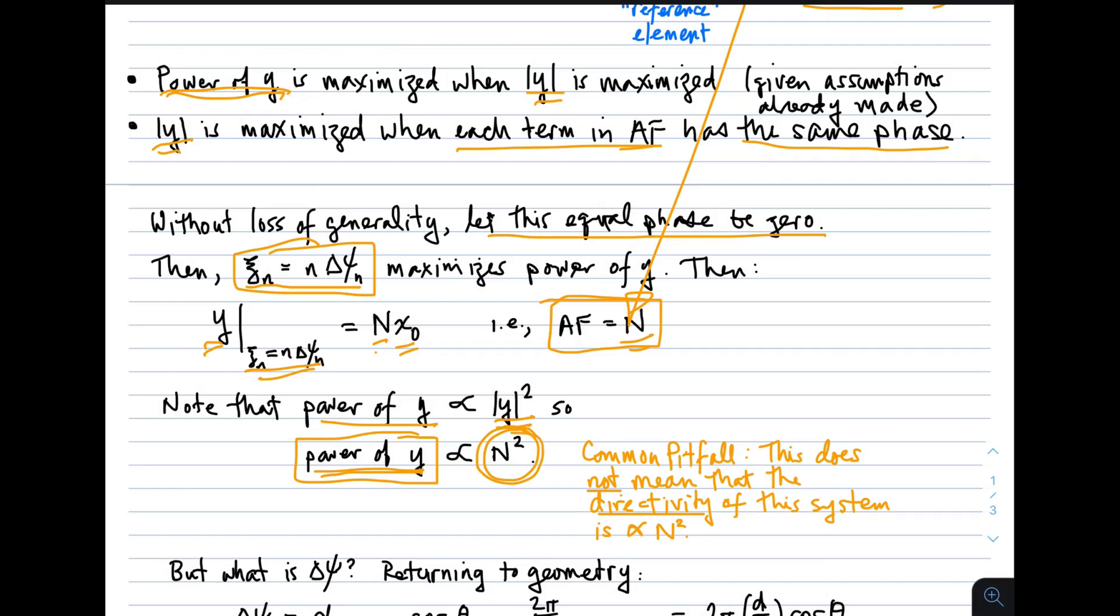Now, at this point, let me identify a very common pitfall that even experts fall into from time to time. This does not mean that the directivity of the system is proportional to n squared. All we're saying is that the power at the output is proportional to n squared. Remember, directivity refers to power relative to average power—that is, power averaged over all spatial directions. And we really haven't addressed what the power over all spatial directions is yet. There will be some conditions in which directivity is proportional to n squared. In fact, it's equal to n squared. There will be many other conditions in which it is not equal to n squared and could be very, very different. So just dropping that on you now so that you don't make that mistake in the future.